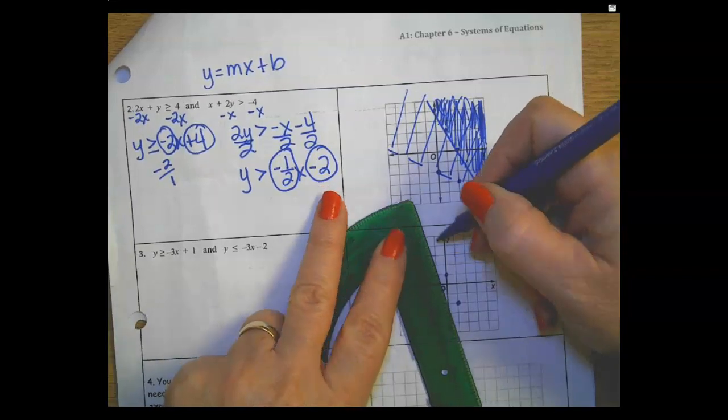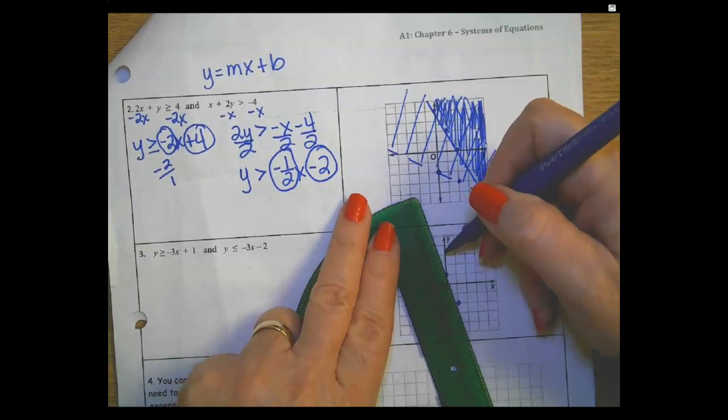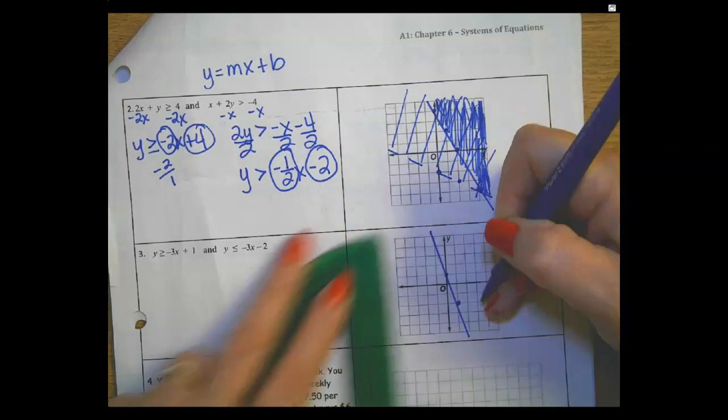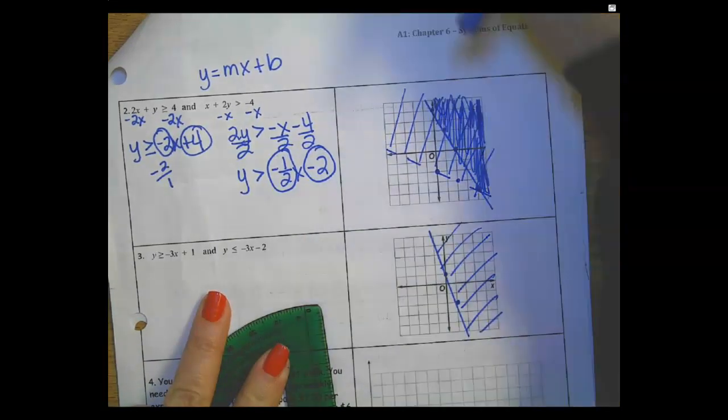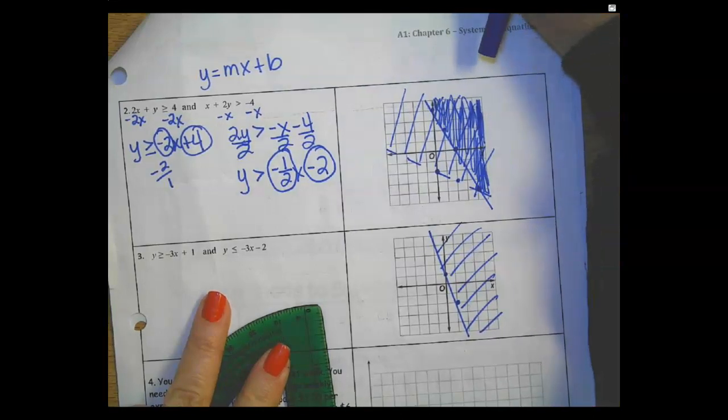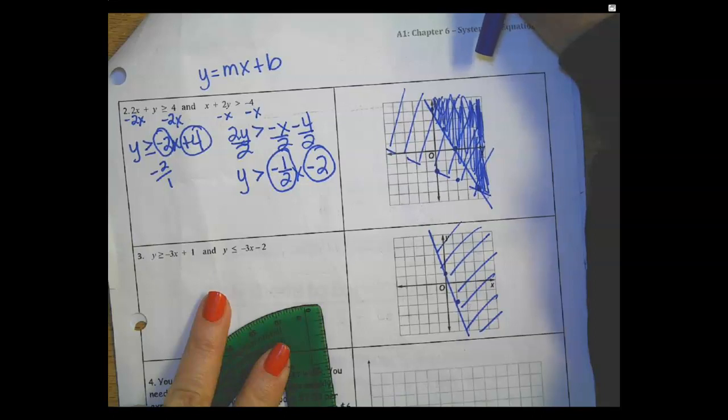So here's one of the lines. And if I look in Desmos it's a solid line, so solid line. And it's shading it this way.